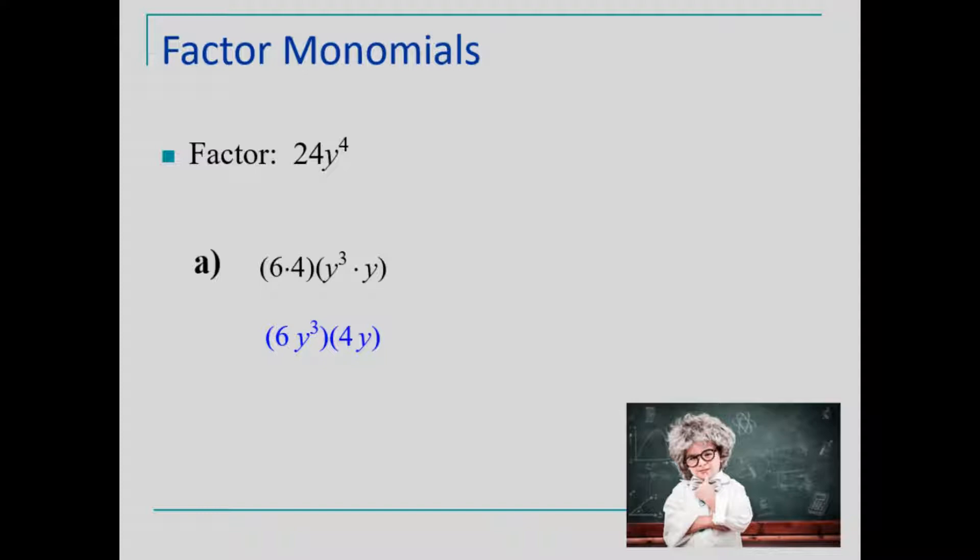To check this, multiplying these factors gives the product of the original monomial 24y to the power of 4.